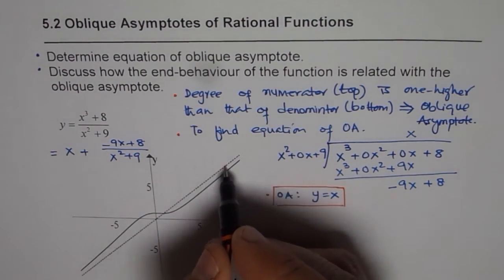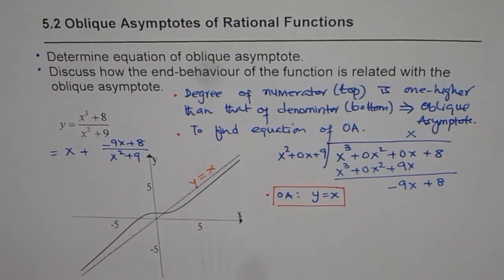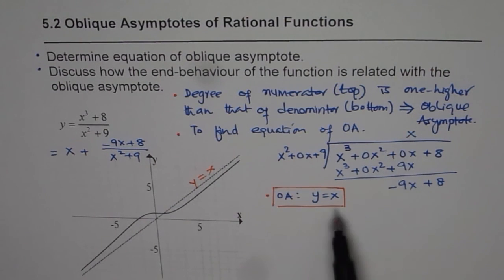Now in this diagram, here we have this equation, y equals to x. So we get the first part, that is how to find oblique asymptote. Just divide the numerator by denominator. Quotient is your oblique asymptote.